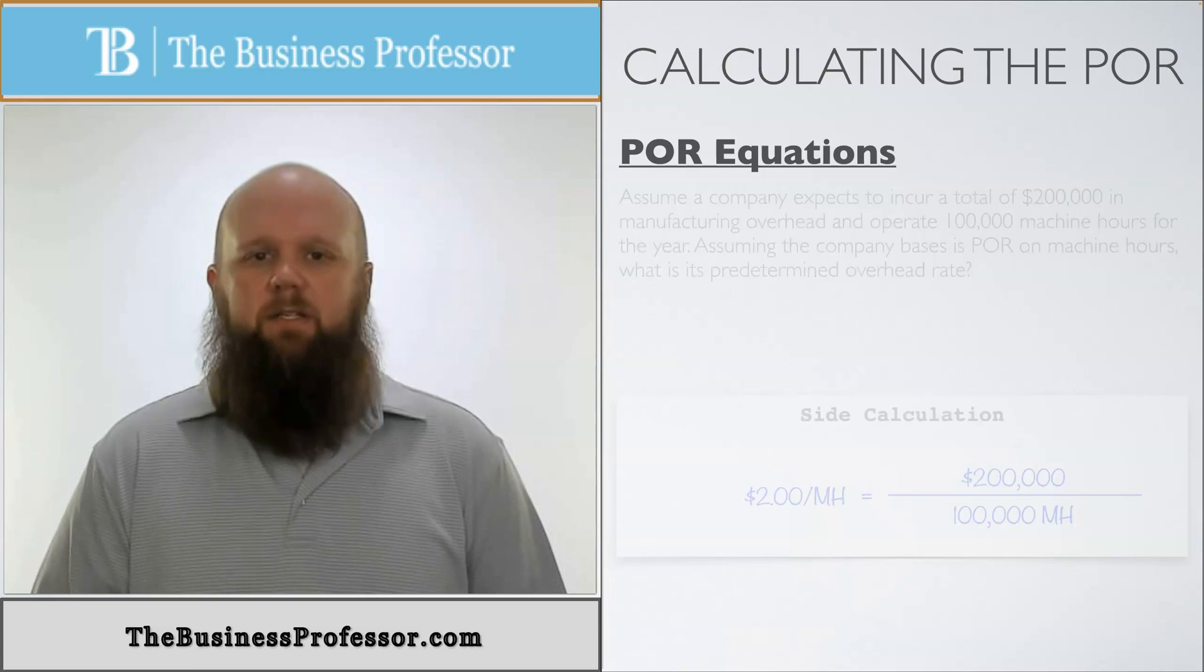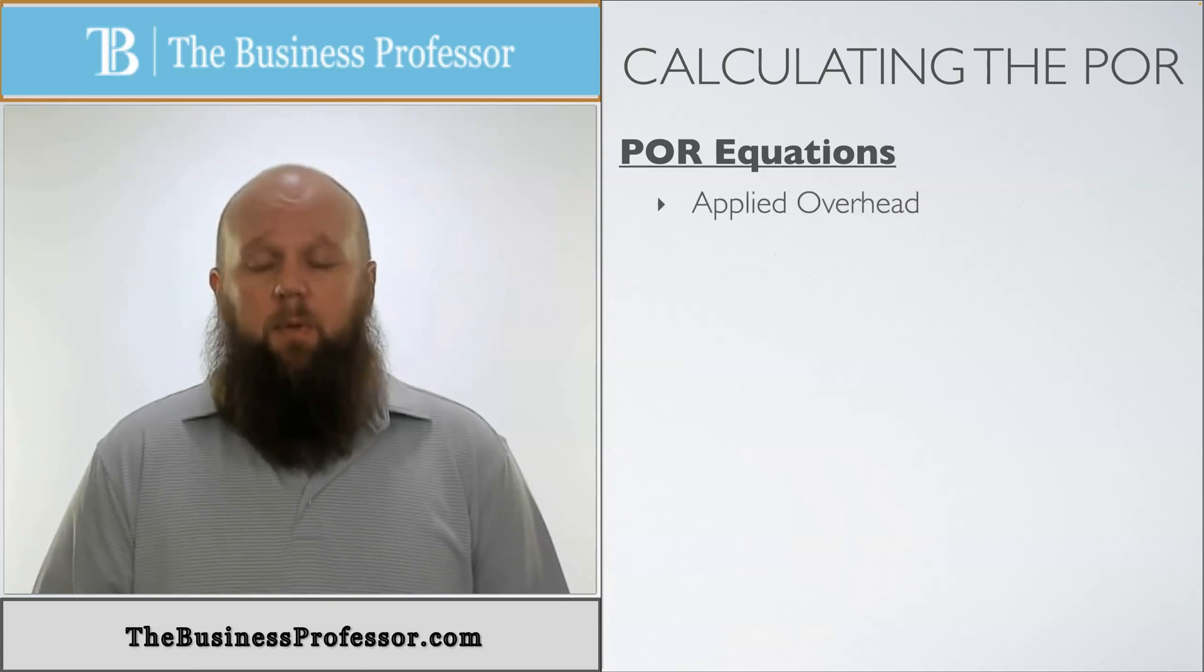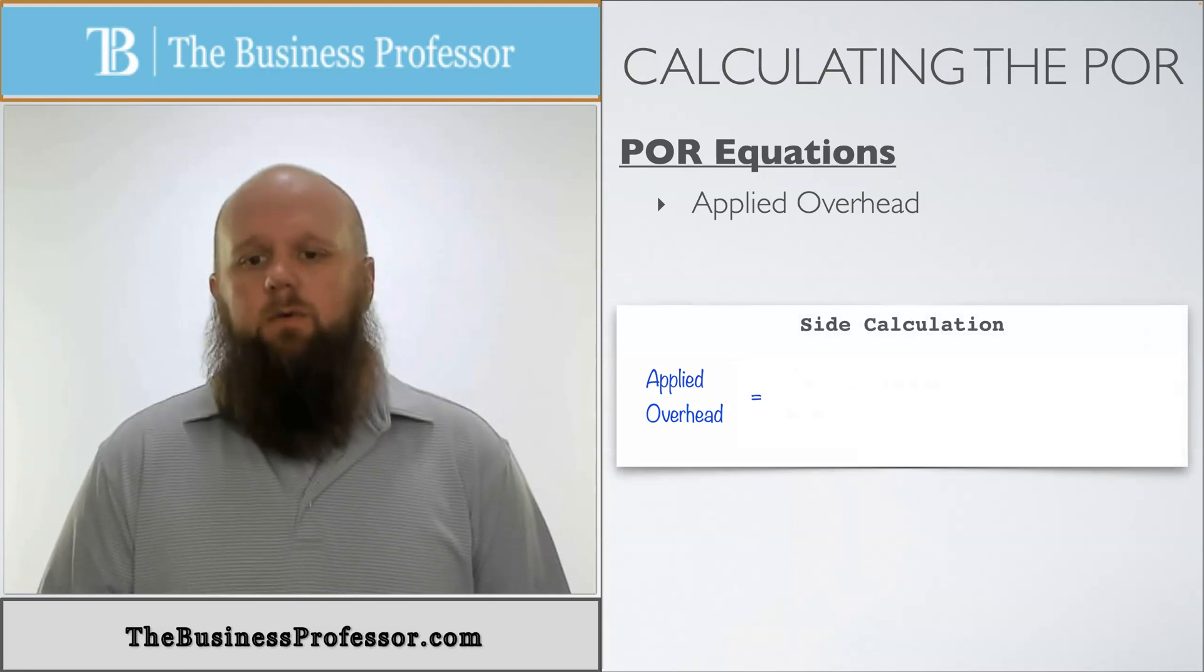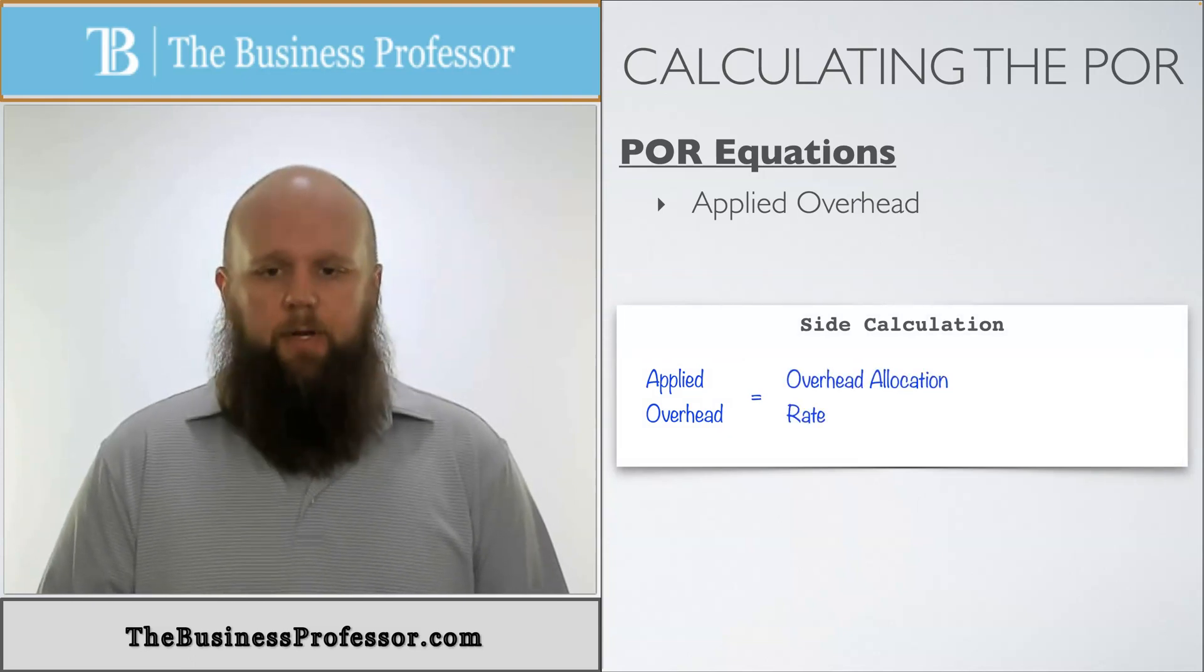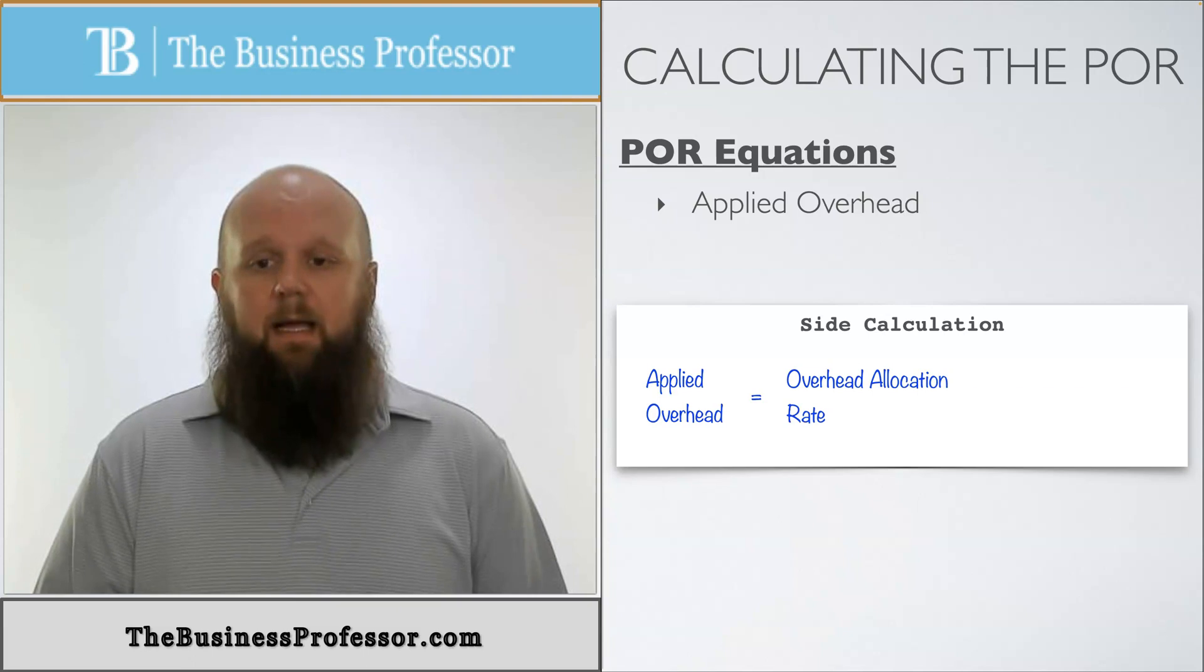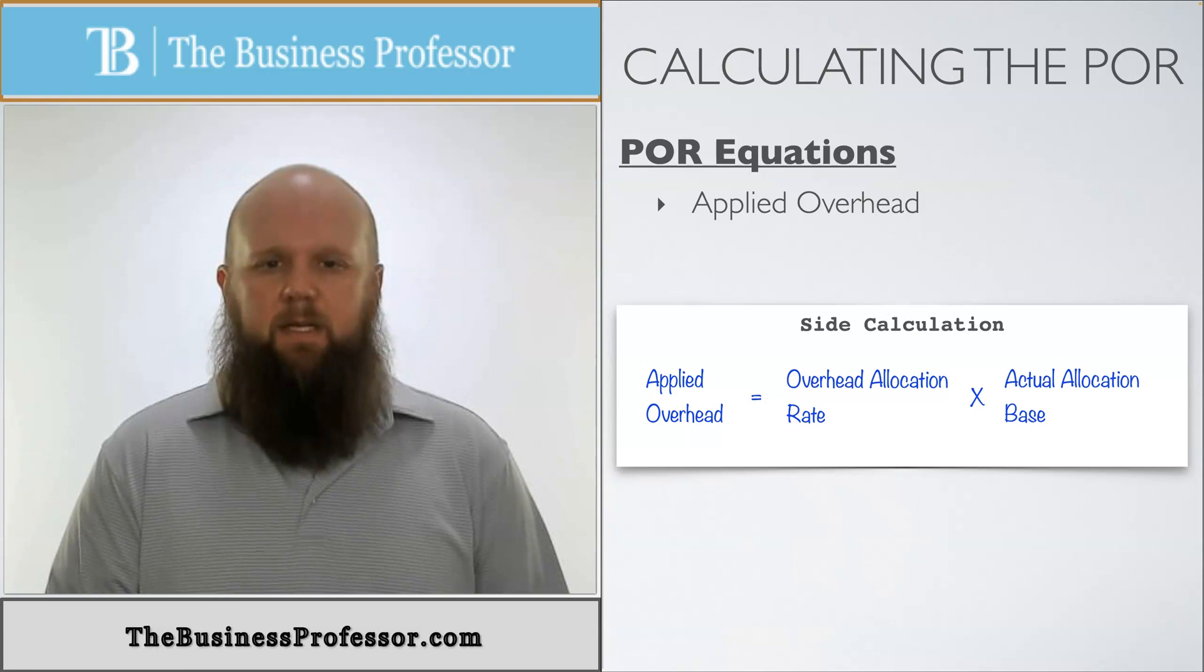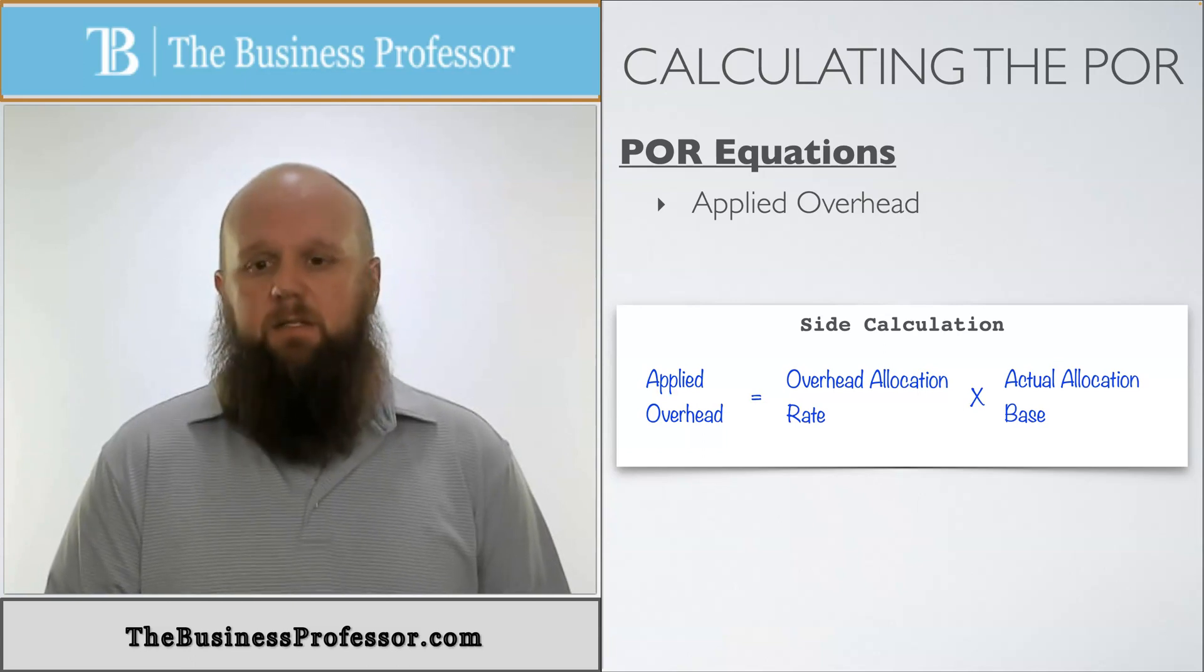Now let's look at the application side. Applied overhead, the equation for this is the applied overhead equals the POR, or predetermined overhead allocation rate, times the actual allocation base. So the POR, or the overhead allocation rate, is based off two estimations.